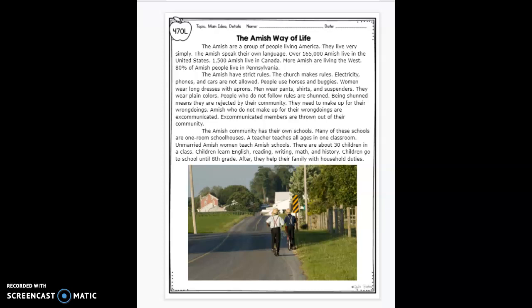The Amish have strict rules. The church makes the rules. Electricity, phones, and cars are not allowed. People use horses and buggies. Women wear long dresses with aprons, and men wear pants, shirts, and suspenders. They wear plain colors. People who do not follow rules are shunned. Being shunned means they are rejected by their community. They need to make up for their wrongdoings. Amish who do not make up for their wrongdoings are excommunicated.